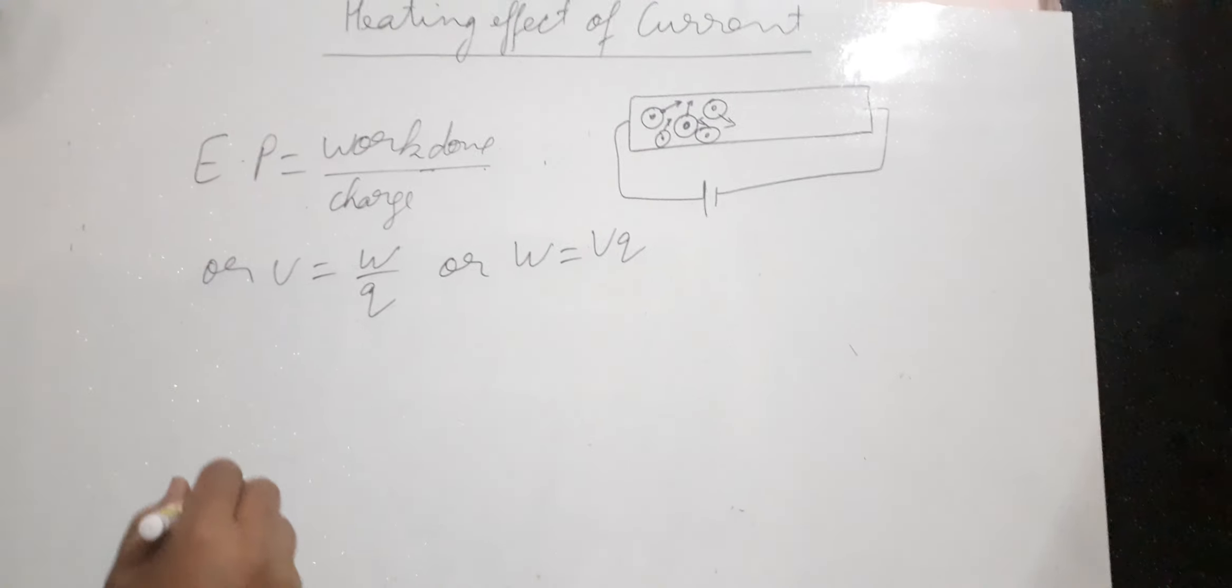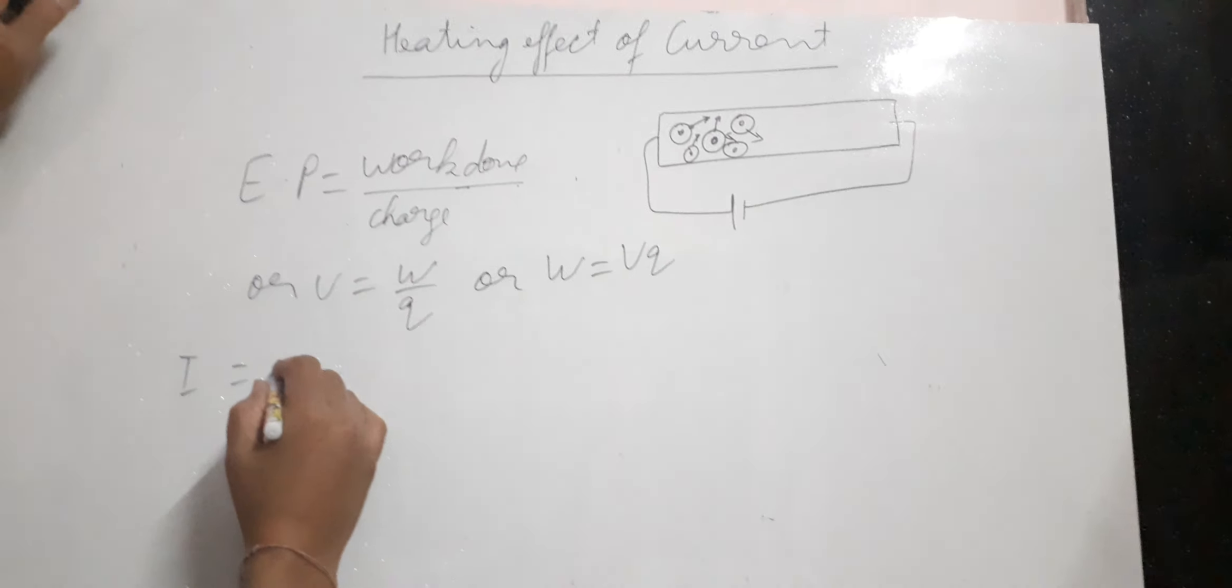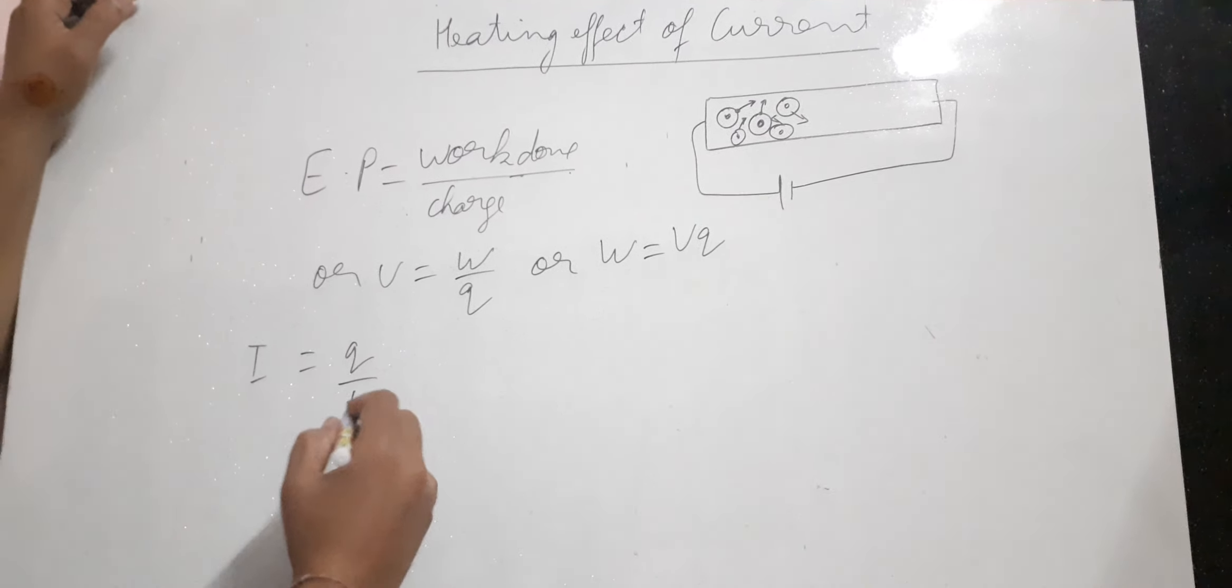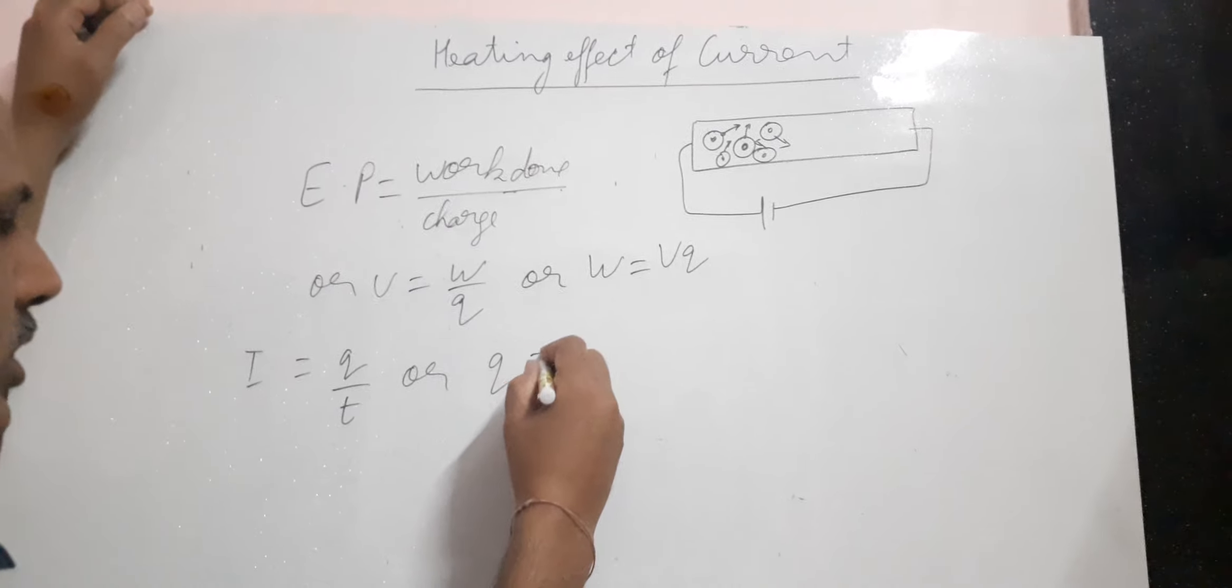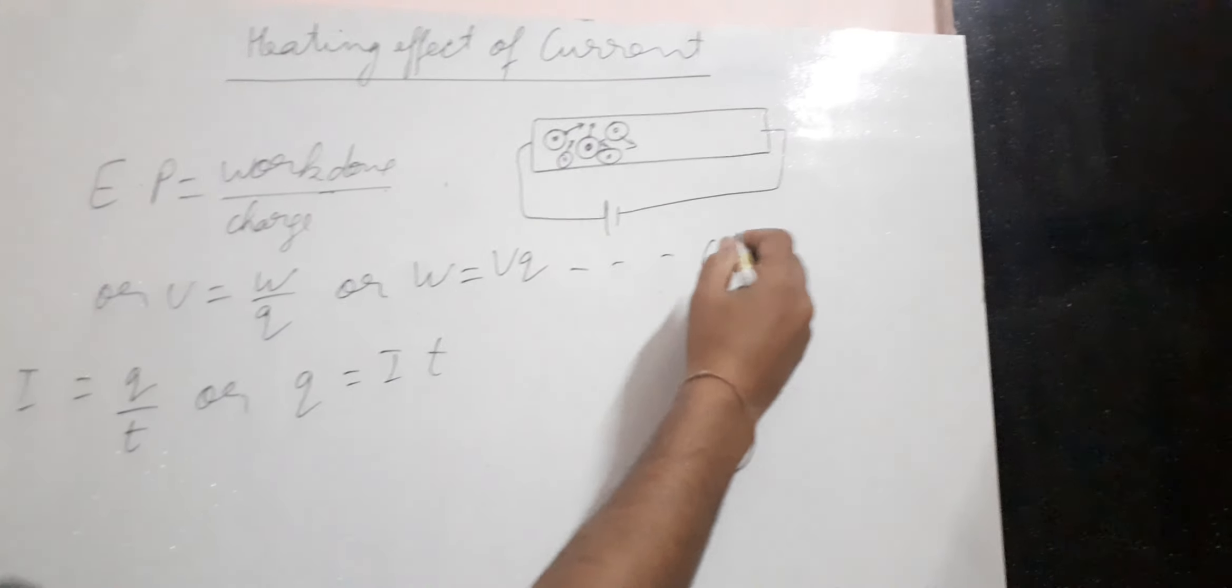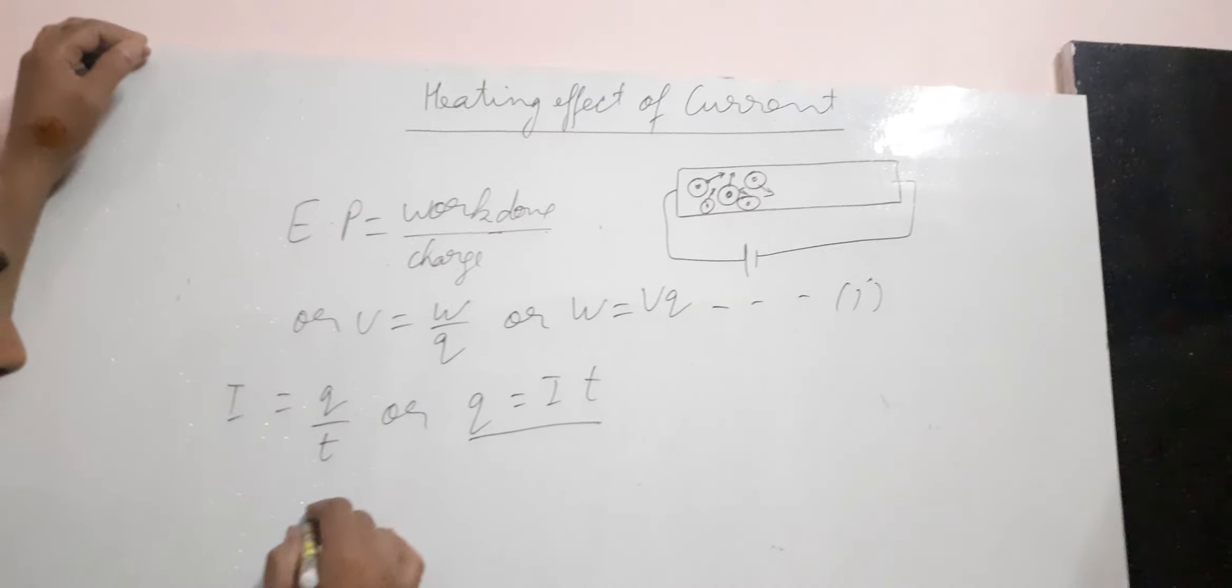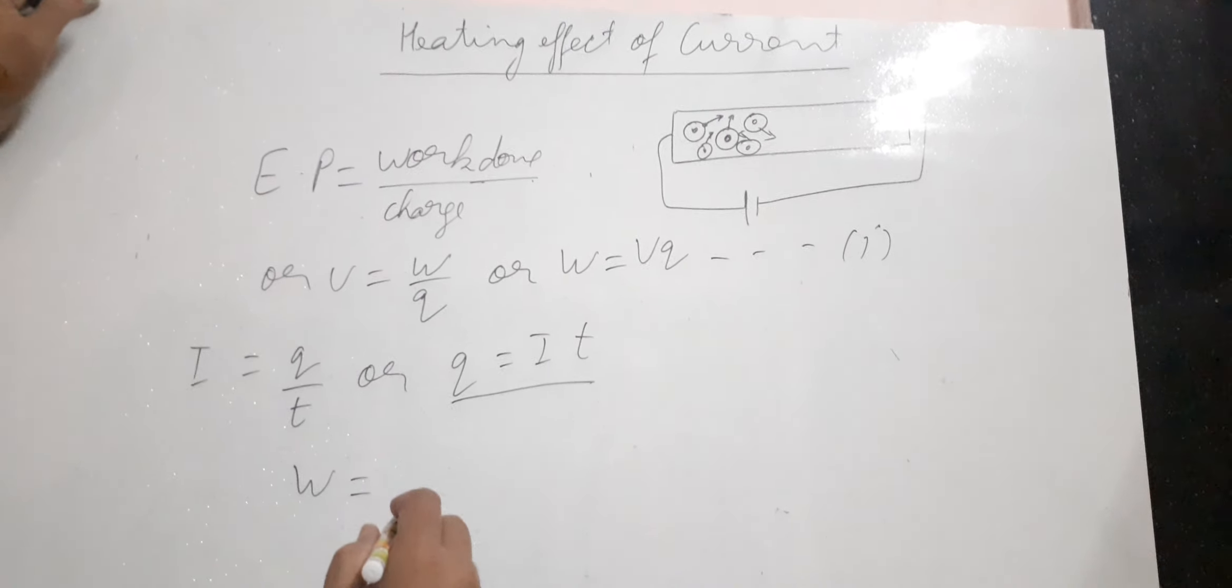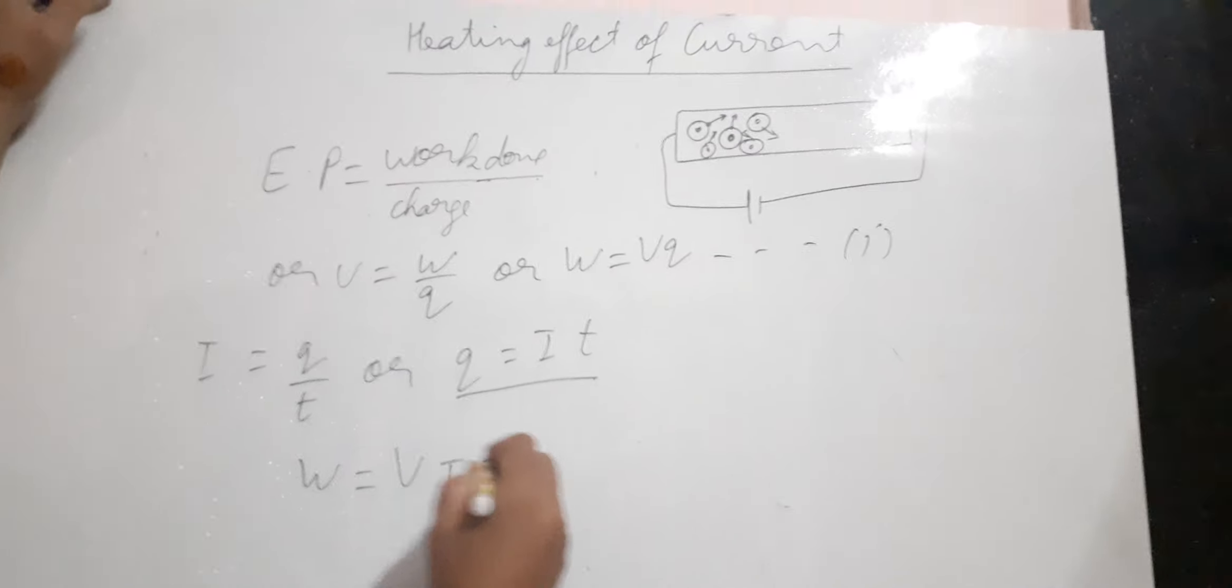From this, we can say that W = V × Q. From the definition of current, you know that I = Q/T, which means current equals charge transferred upon time taken. Or you can say Q = I × T. By substituting the value of Q in equation 1, we get W = V × I × T.